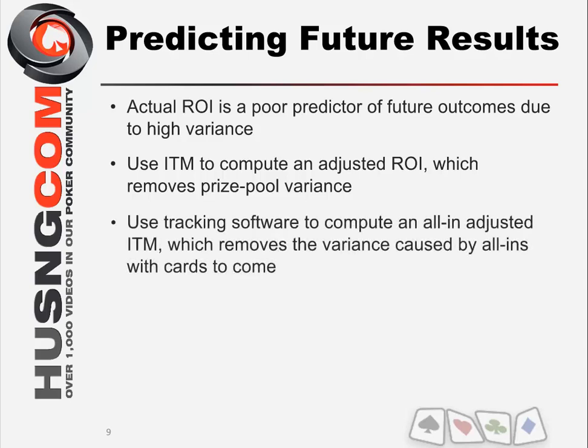The way we can use tracking software to help us is to compute an all-in adjusted In The Money. That's the key — computing a good In The Money. By using all-in equity adjusted chips, you'll be able to remove some of the variance caused in these games, specifically variance caused by being all-in with cards to come.